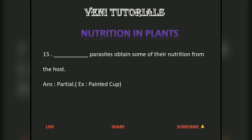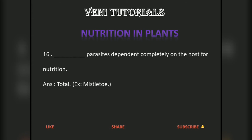Partial parasites obtain some of their nutrition from the host — for example, painted cup. Total parasites are dependent completely on the host for nutrition — for example, mistletoe.